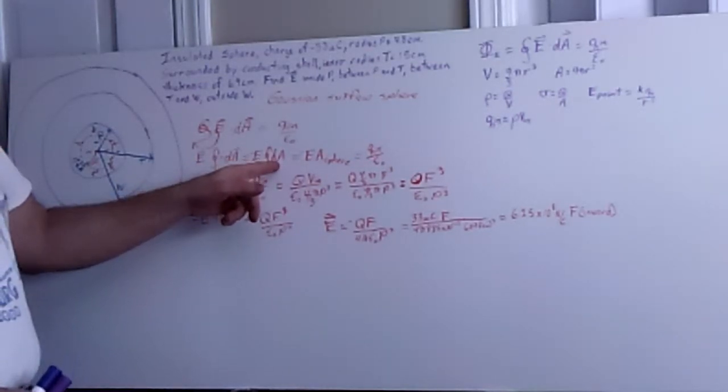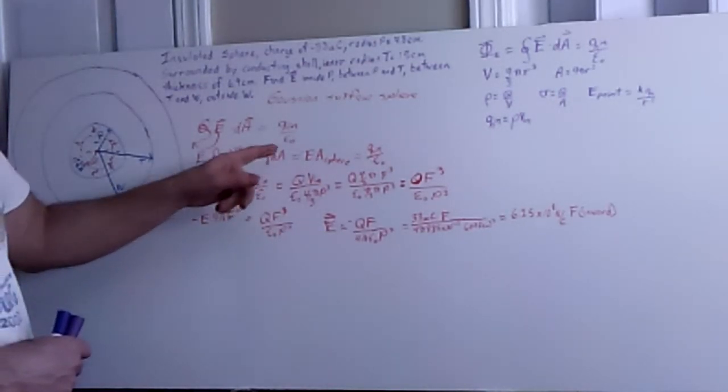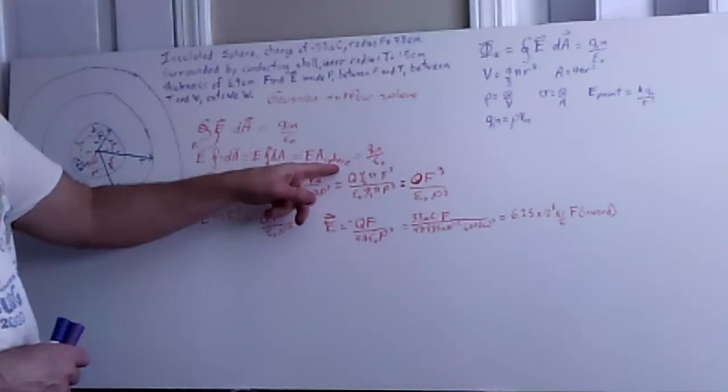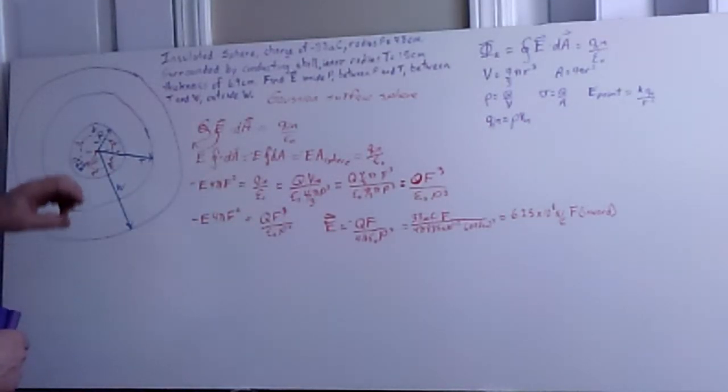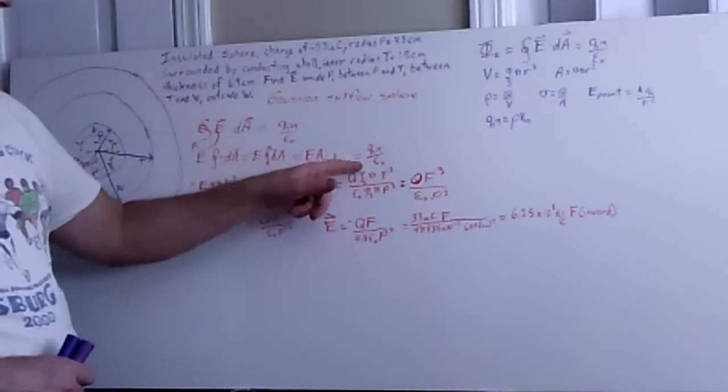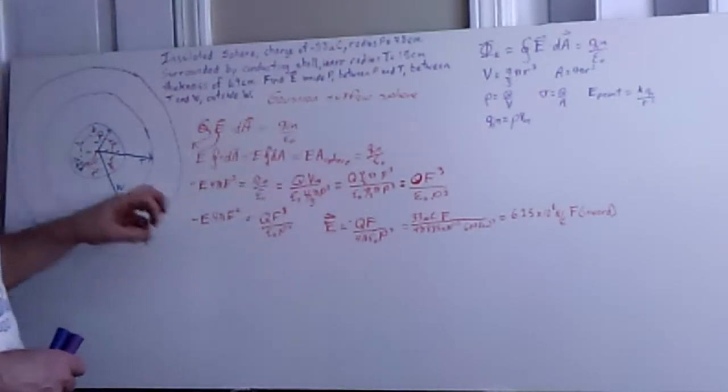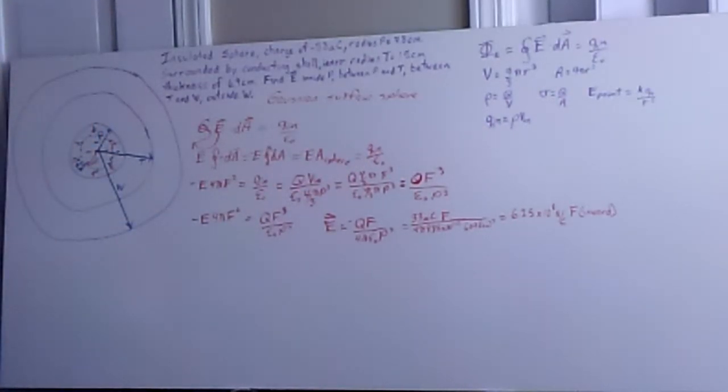So the integral of dA is simply dA, so we get negative EA of the sphere, and that happens to be the Gaussian sphere now that we're going to be concerned about. And again, that's going to be equal to the charge inside of that Gaussian sphere divided by epsilon zero.